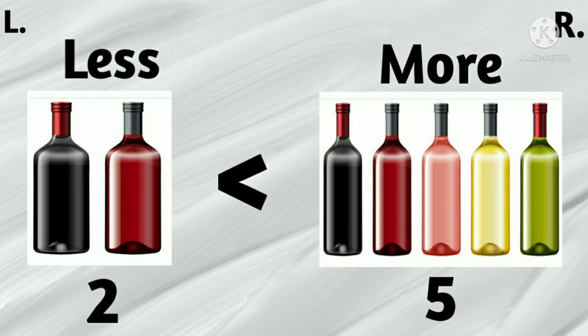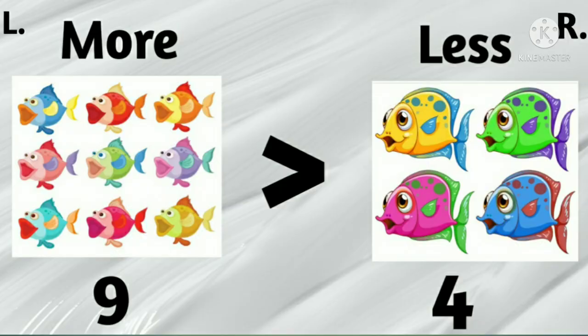Here 2 bottles are on the left side and 5 bottles are on the right side. So we can say the left side has less bottles and the right side has more bottles. In this one, the left side has 9 fishes and the right side has 4 fishes. So we can see there are more fishes on the left side and there are less fishes on the right side.